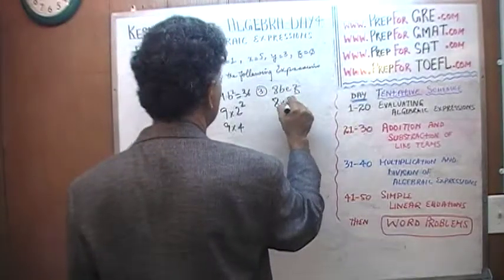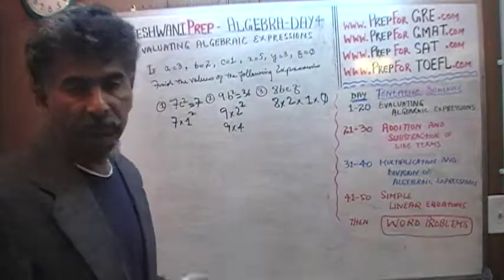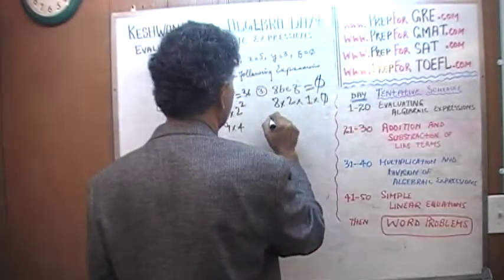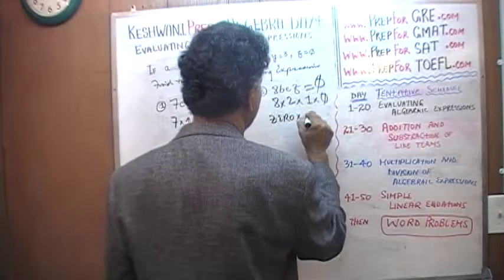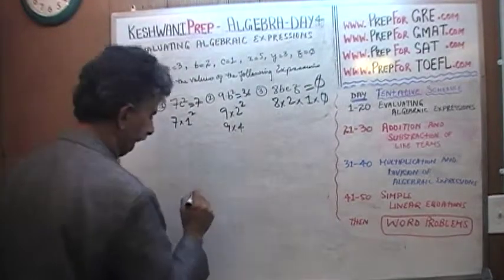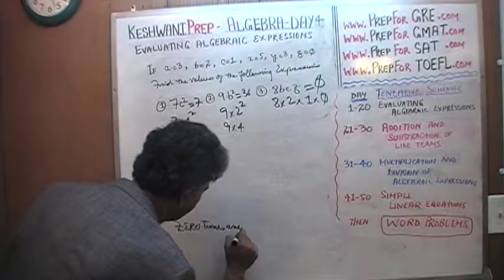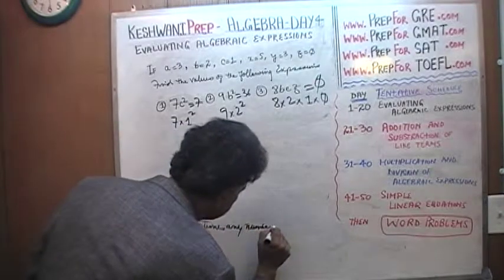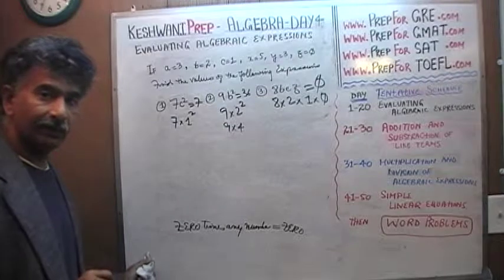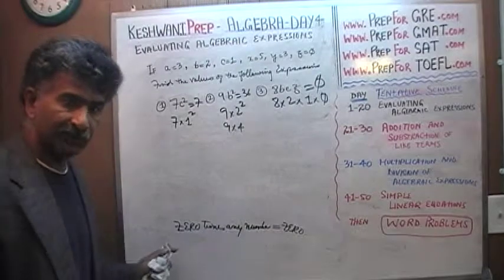8 times b, times b which is 2, times c which is 1, times z. Oh z is 0. And 0 times any number is 0. So this is just a big fat 0, because 0 times any number equals 0.